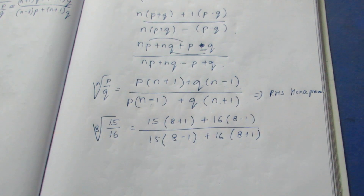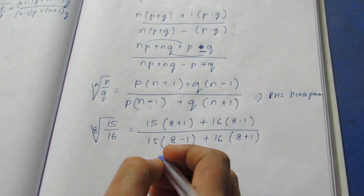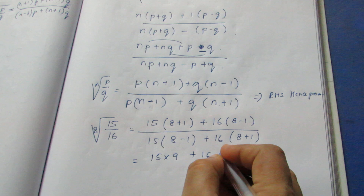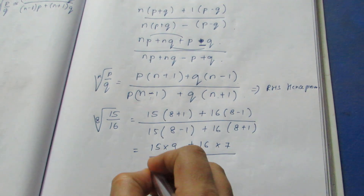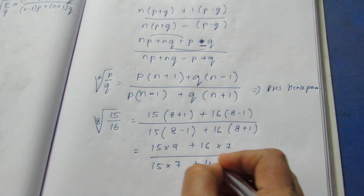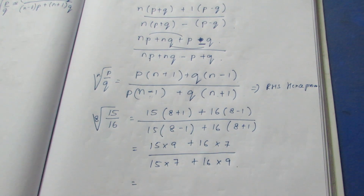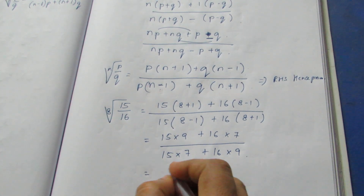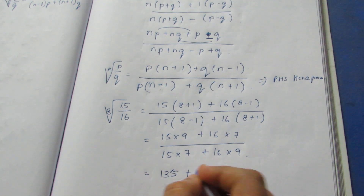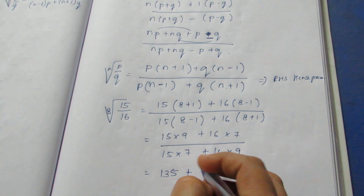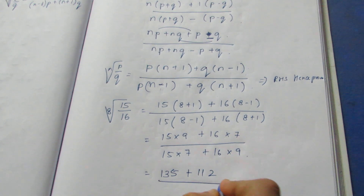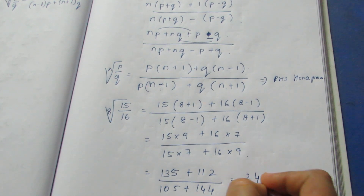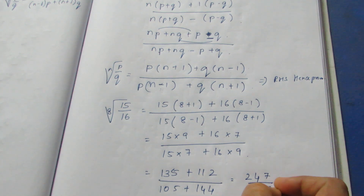Solving: the numerator gives 9 multiplied by 15 is 135, plus 7 multiplied by 16 is 112, so numerator equals 135 plus 112 equals 247. The denominator gives 7 multiplied by 15 is 105, plus 9 multiplied by 16 is 144, so denominator equals 249. We now divide 247 by 249.